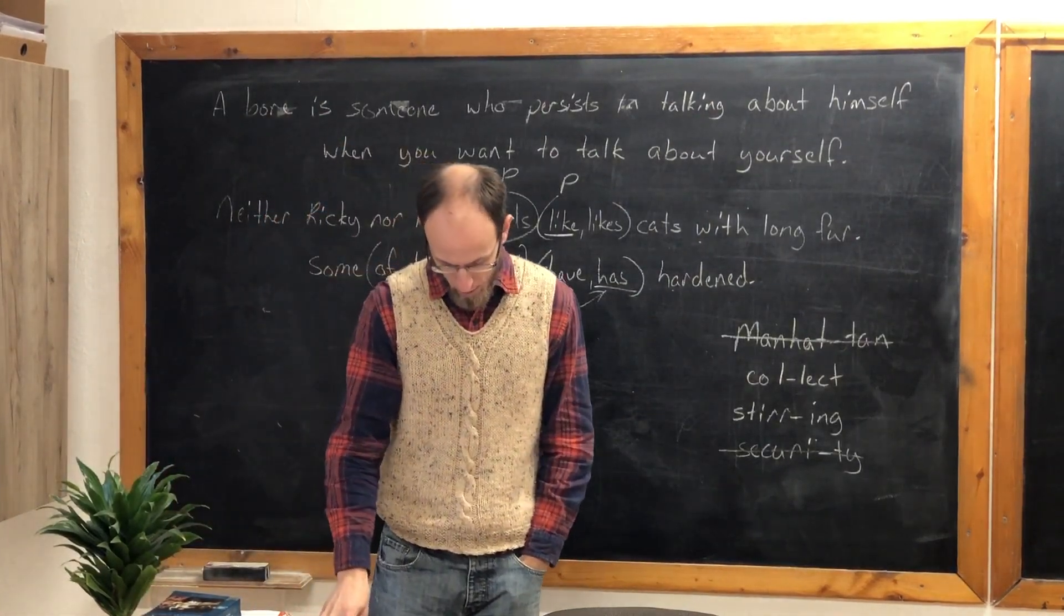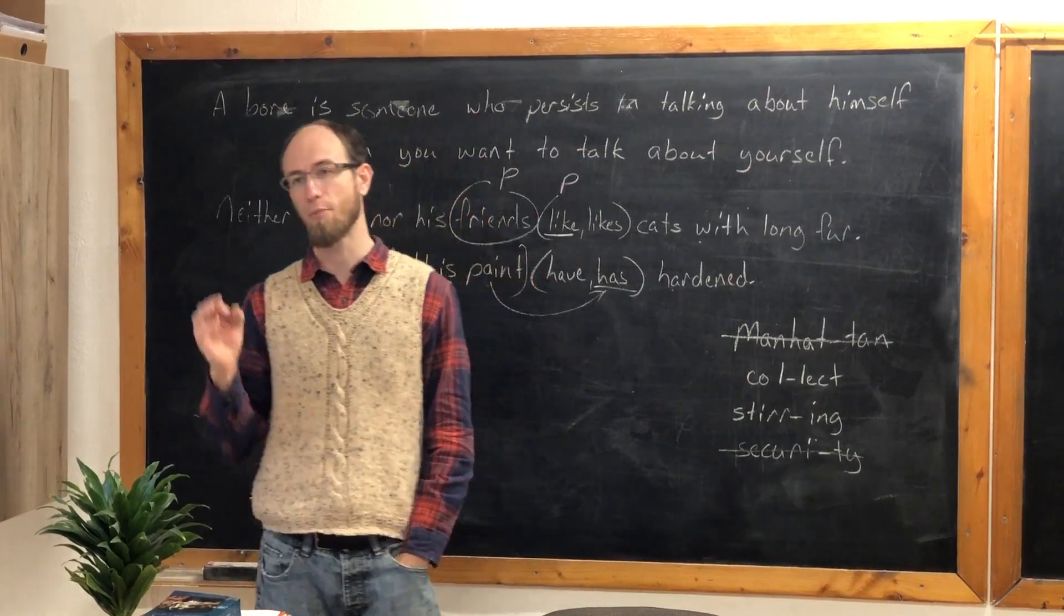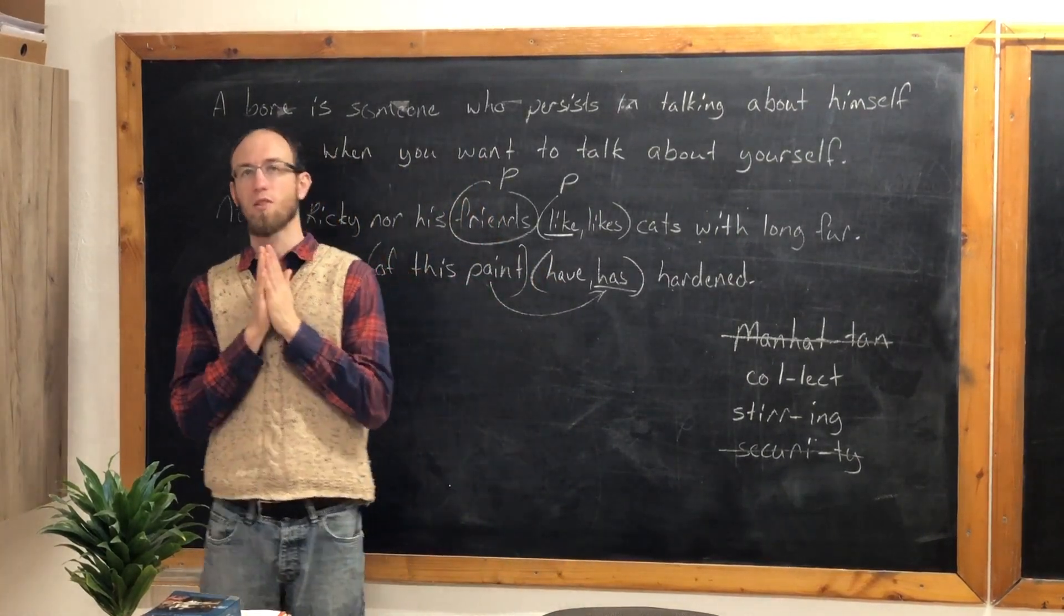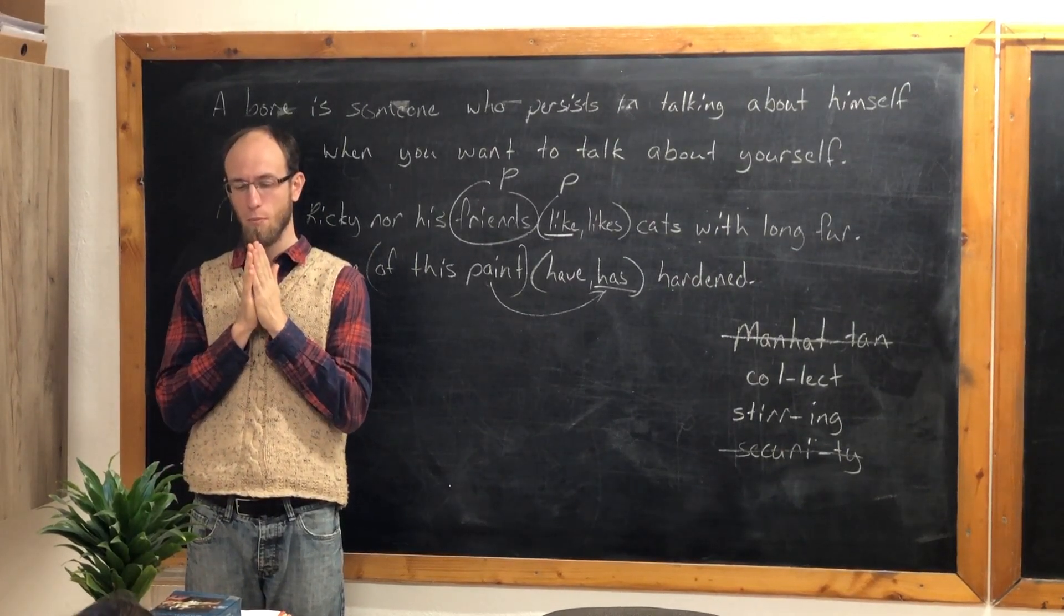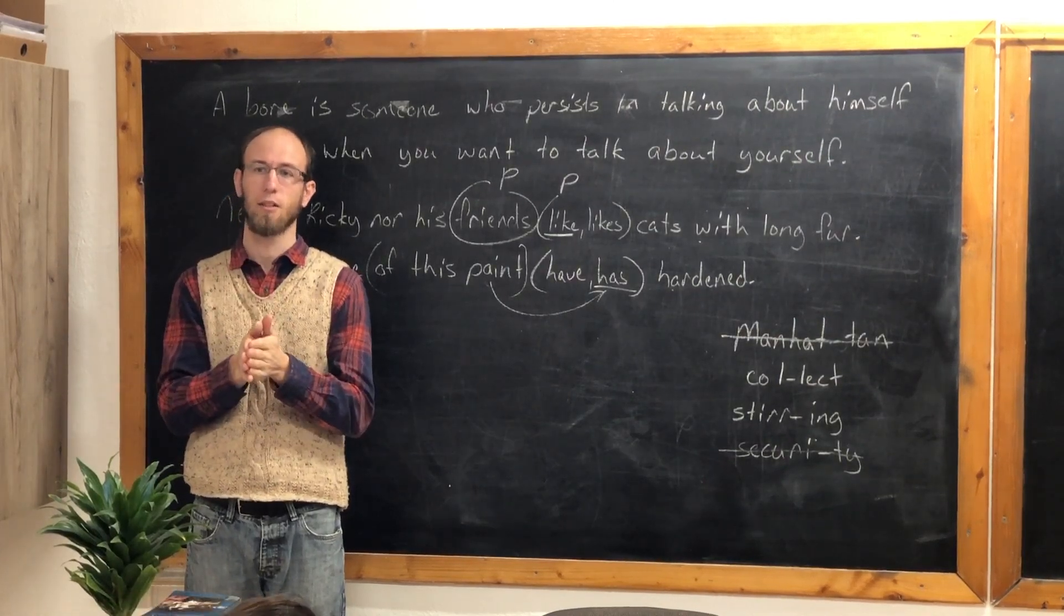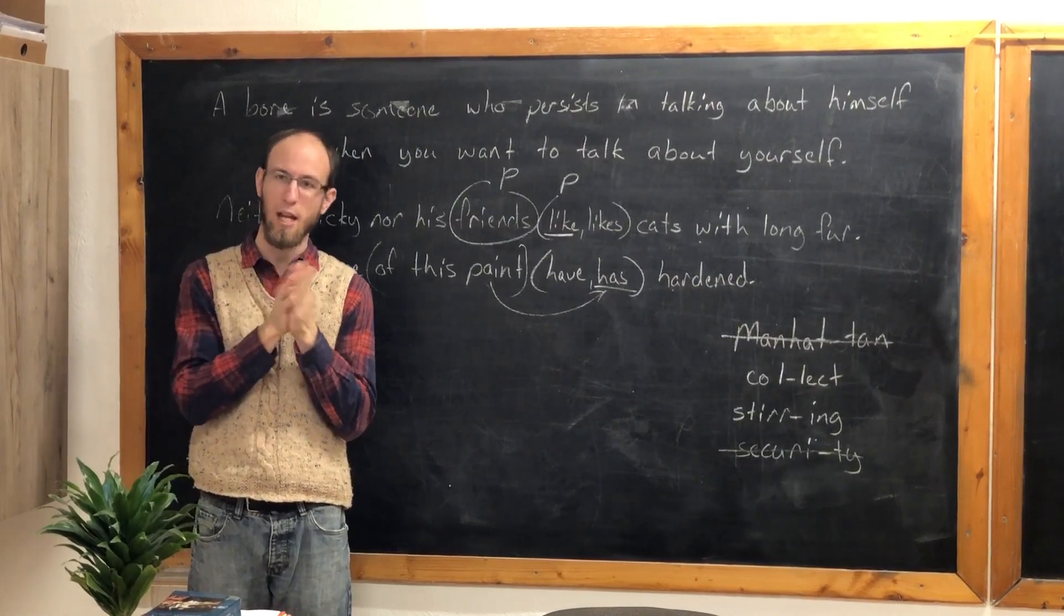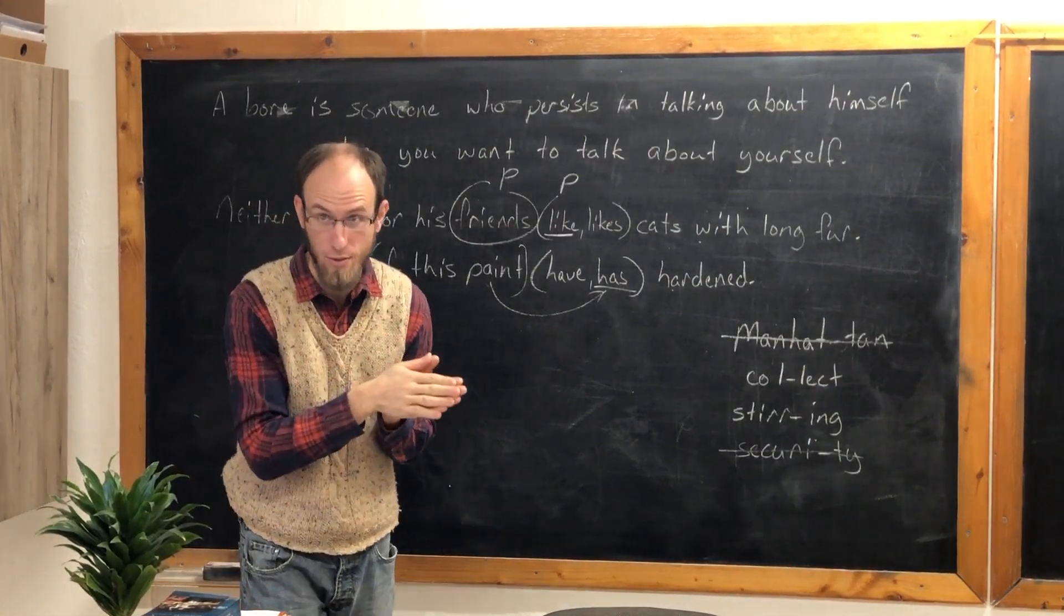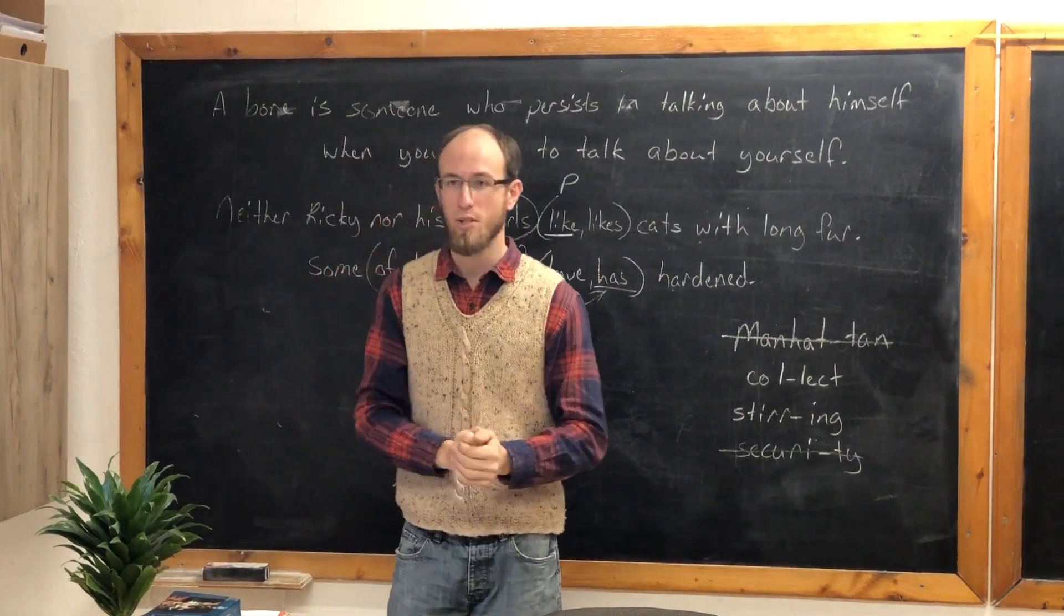The other thing that we need to look out for is whenever we're combining something, two things together. We could say the dog and the cat run. That's what we would say. The dog and the cat run. Not the dog and the cat runs. The dog and the cat run. Because it's two things, run. But sometimes you don't have two things.